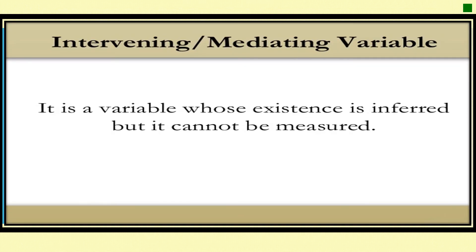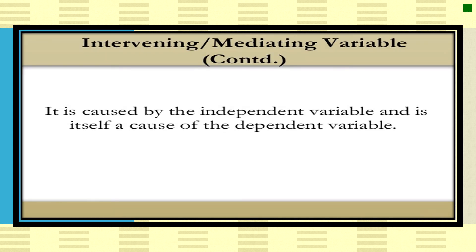We have another variable which is the intervening or mediating variable. It is a variable whose existence is inferred but it cannot be measured. It is caused by the independent variable and is itself a cause of the dependent variable. Intervening variable is a hypothetical variable used to explain causal links between other variables. For example, there is an association between being poor and having a shorter lifespan — it is a hypothetical variable.